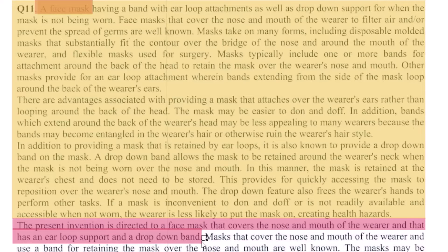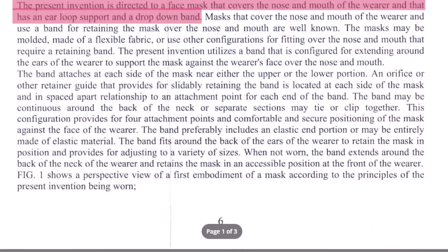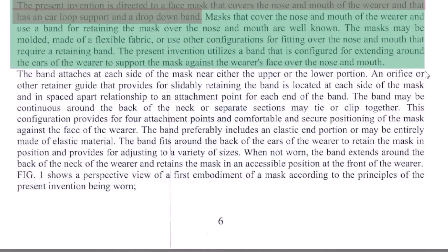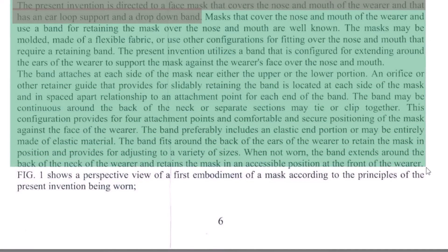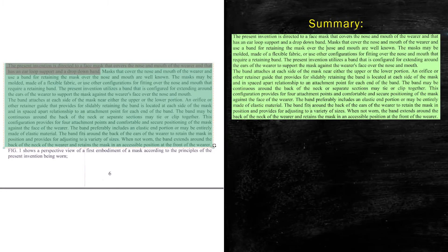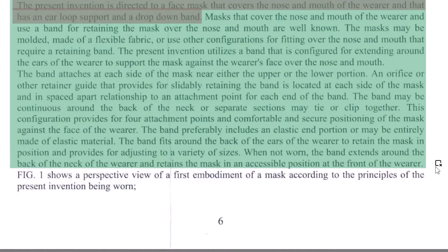Moving on to the next section, which is the Summary of the Invention. This entire portion is talking about various features of our invention. A couple of sentences from here can be removed because they seem to be talking about the background, but it's fine — you can use this section as the Summary of the Invention.